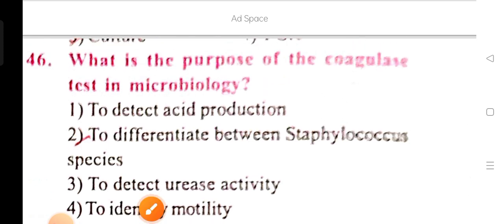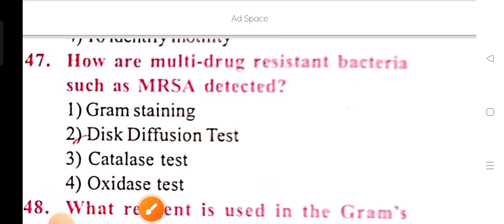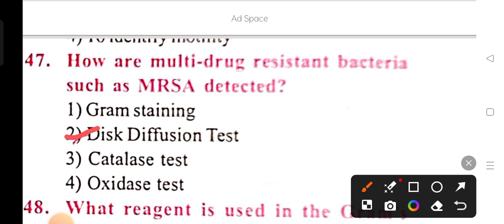How are multi-drug resistant bacteria such as MRSA detected? Multi-drug resistant bacteria means more than three drug combinations resistant. Options are gram staining, disk diffusion test, catalase test, and oxidase test. Option 2 is the correct answer: disk diffusion test.